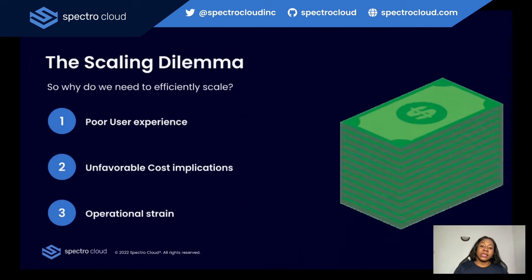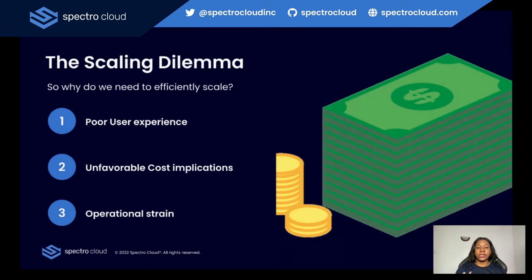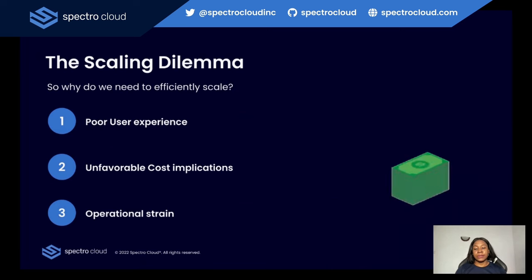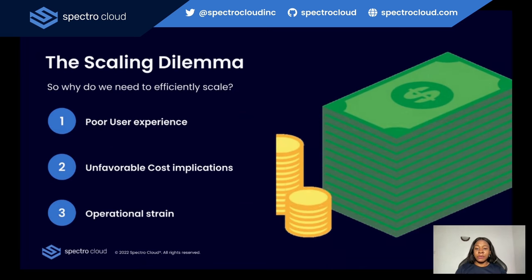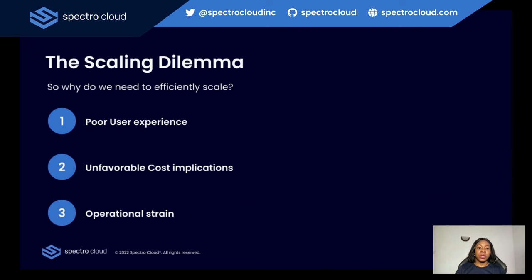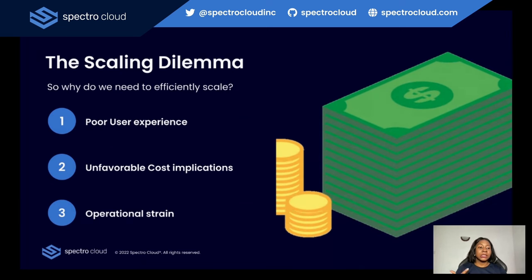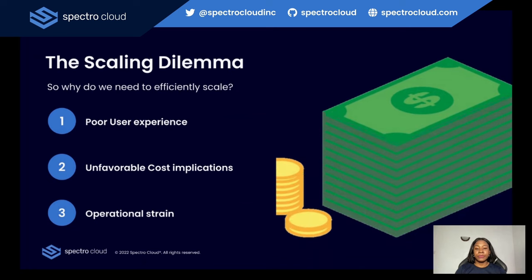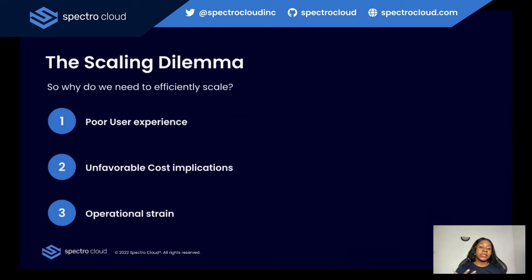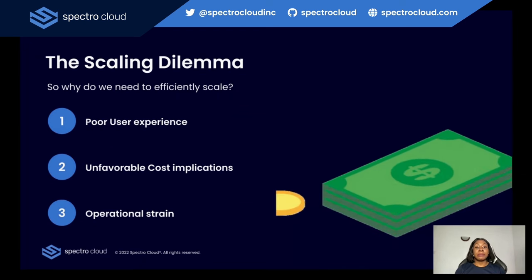Let's look at another scenario where a retail company allocates excessive server resources on its on-prem data center to handle high traffic during the holiday season. The outcome is that during the peak season, those resources are largely unused, resulting in wasted electricity, increased cooling costs, and inefficient resource allocation. There's also potential operational strain on your team because people need to manually monitor things and make changes accordingly.